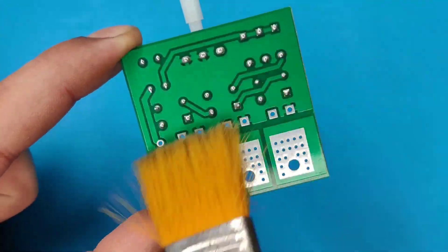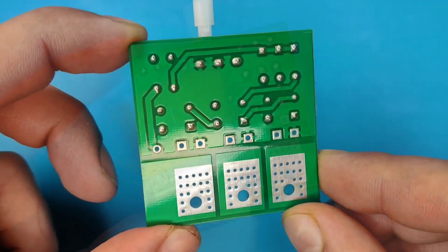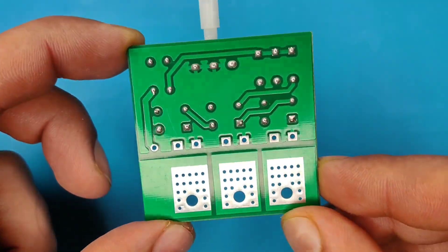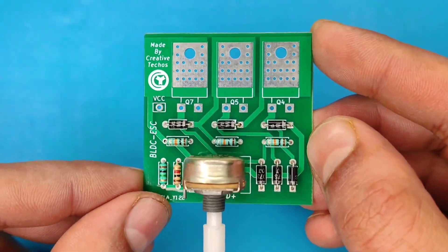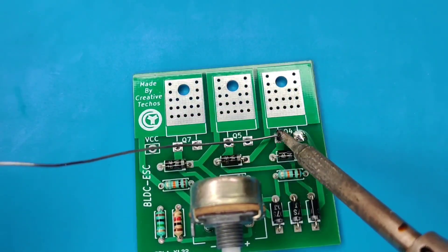The PCB looks nice and clean. Now pre-solder the MOSFET pads.